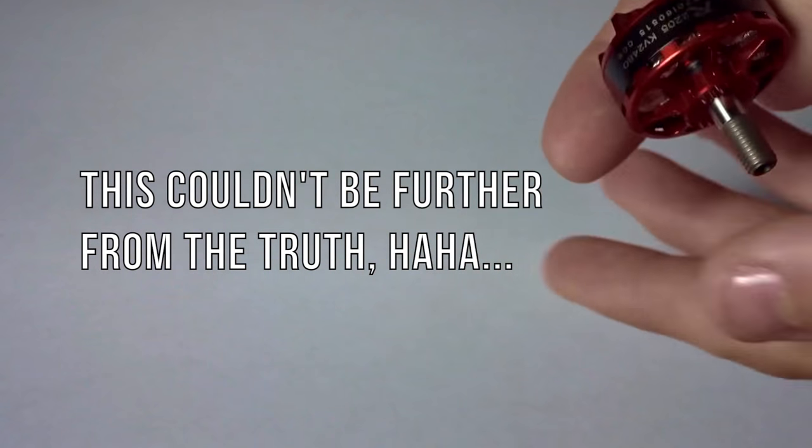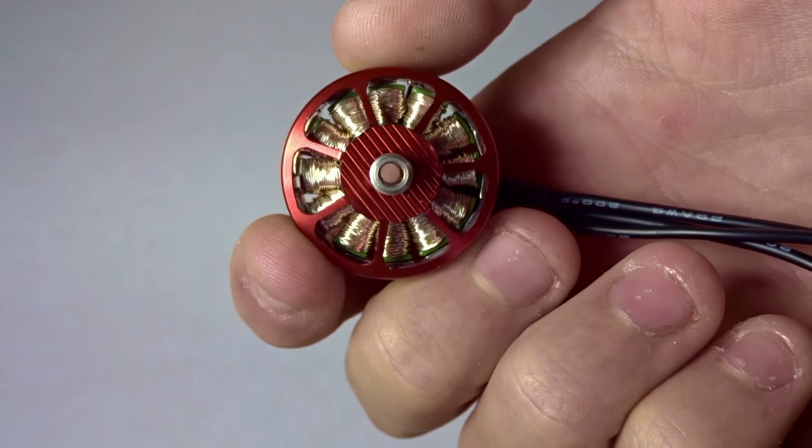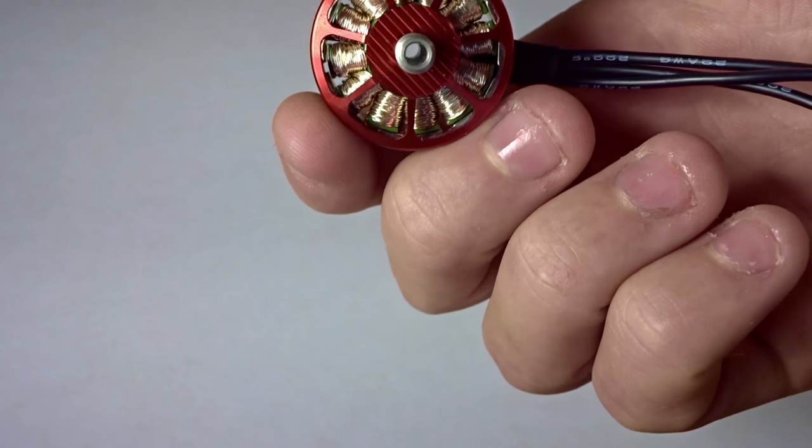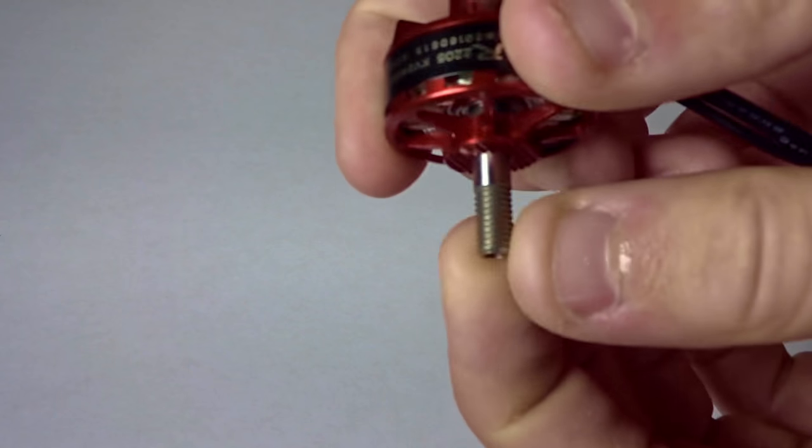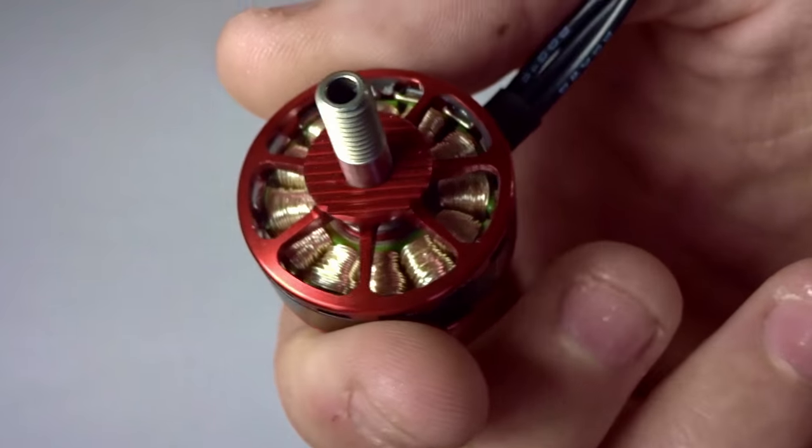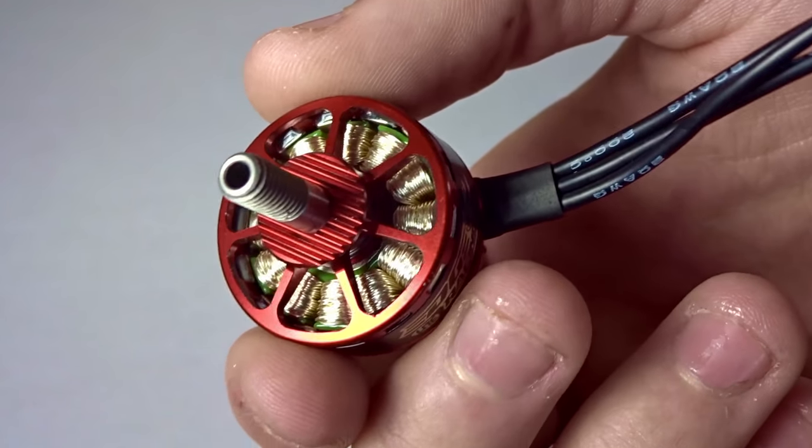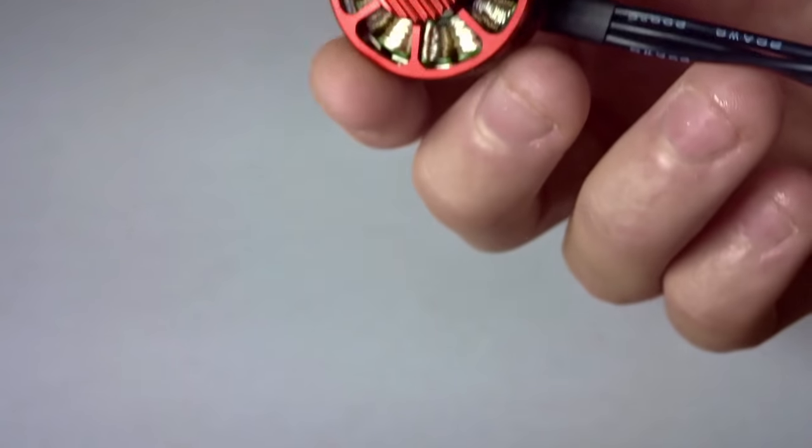The shaft is actually hollow all the way through, which helps increase the strength. It's hardened steel. On top where the prop mounts, you can see it's ridged there, so that'll help grip the prop even more, which is a really cool design.